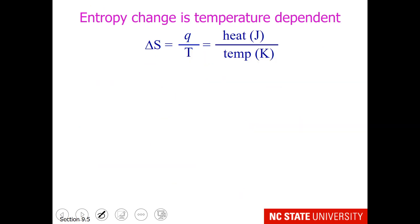How do we represent that mathematically? Remember that entropy change is temperature dependent. It is heat in joules over temperature in Kelvin. So let's look at 800 joules of heat added to a system at two different temperatures, when water freezes and when water boils.